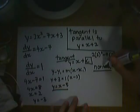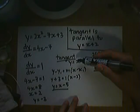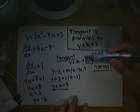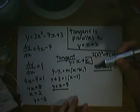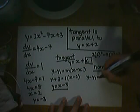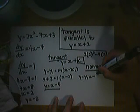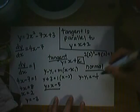The normal is perpendicular to the tangent. This means that the gradient is the negative reciprocal of this. Therefore, we know, as this was 1, the negative reciprocal will be negative 1 over 1, which is negative 1.